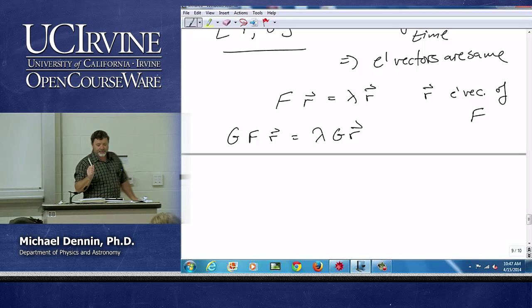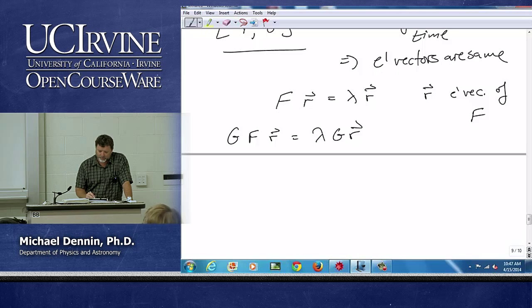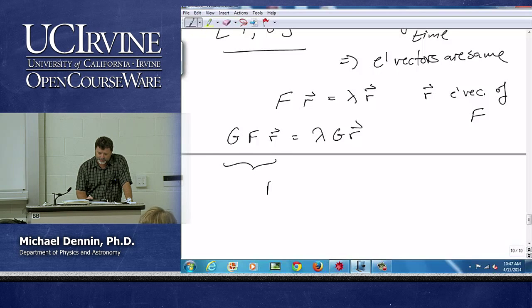Now because g and f commute, and only because they commute, this can be written as f acting on g r equals lambda acting on g r.